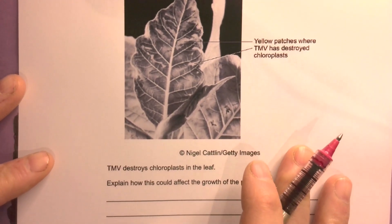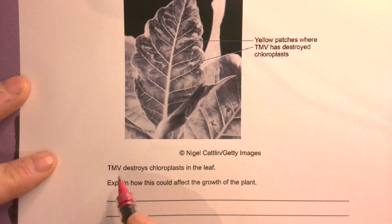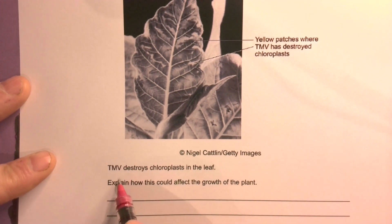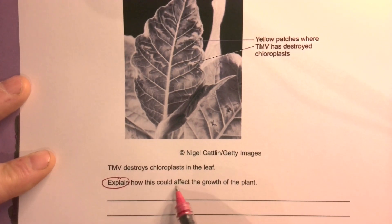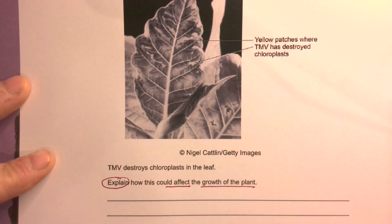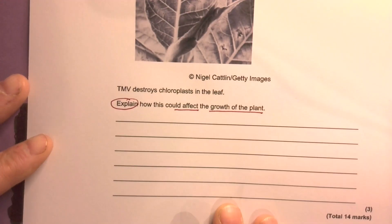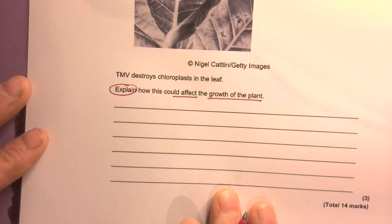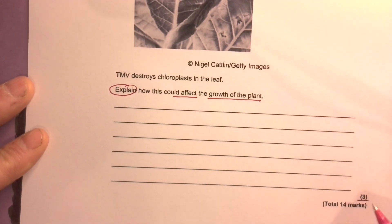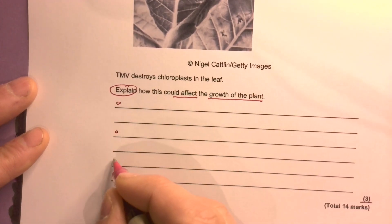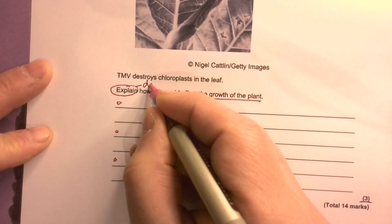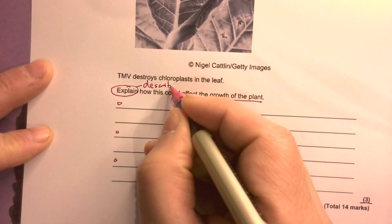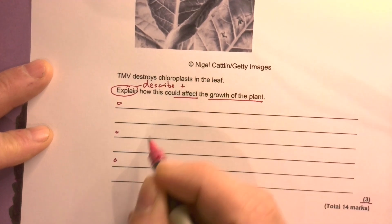So what does it tell us? TMV destroys chloroplasts in the leaf. Explain how this would affect the growth of the plant — it's worth three marks in total. So it's a three-mark explain question, meaning we need to describe plus add some detail.